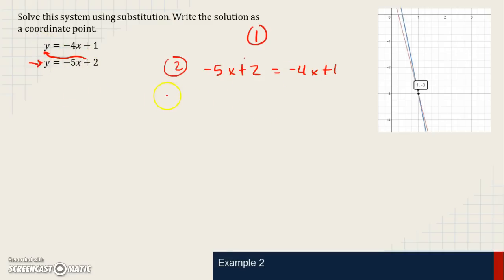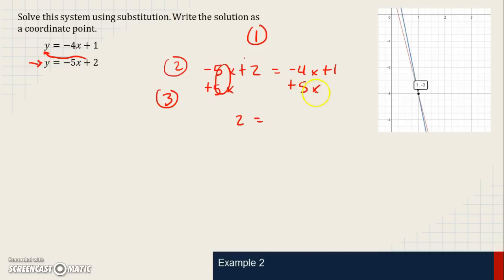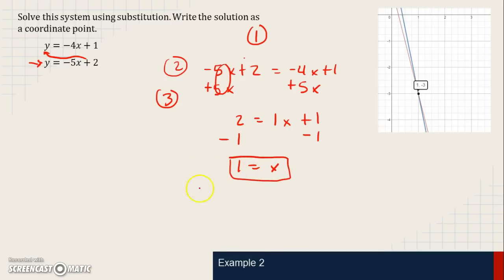Step 3 is to solve. We can't simplify like terms on either side, so we eliminate the variable term on one side by adding 5x to both sides. We're left with 2 equals negative 4x plus 5x plus 1, which simplifies to 2 equals x plus 1. Subtracting 1 from both sides: 2 minus 1 is 1, so x equals 1.